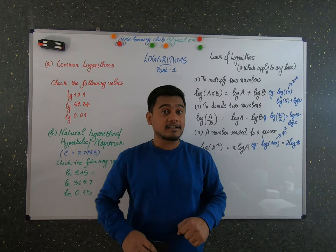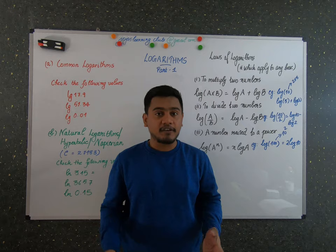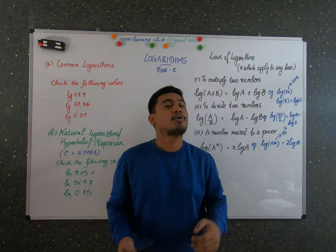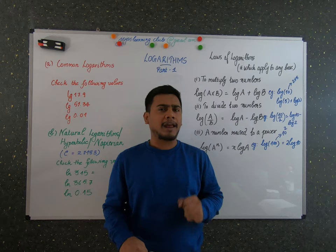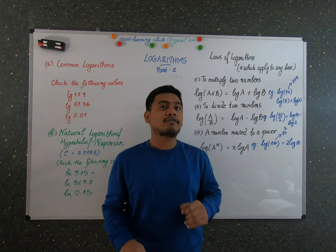Before the use of calculators and scientific calculators, these logarithmic tables were firmly established and used for calculations everywhere. Once calculators evolved, logarithmic tables are now rarely used. But the theory of logarithm is very important because most scientific and engineering laws involve the rules of logarithms.